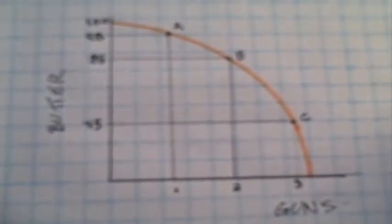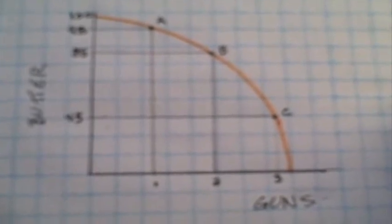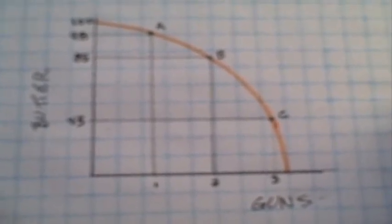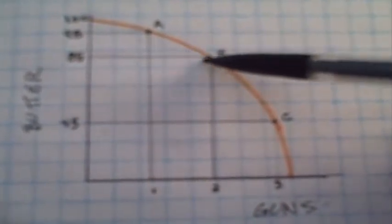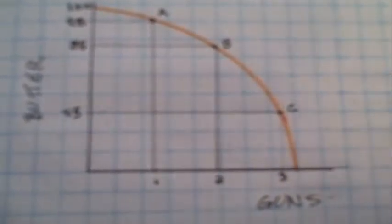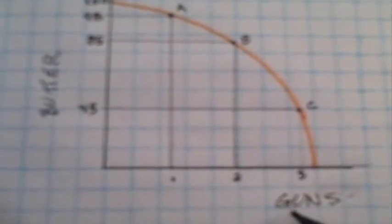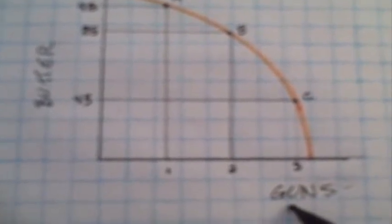Good afternoon. Today I'd like to explain why a concave production possibilities curve exhibits increasing costs. Suppose that there's only two things that an economy can produce: guns and butter.